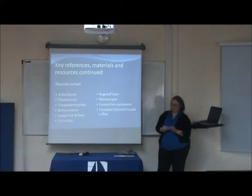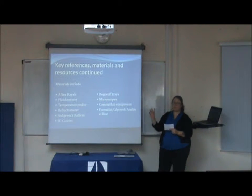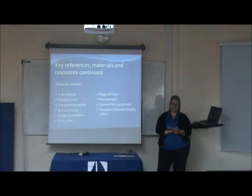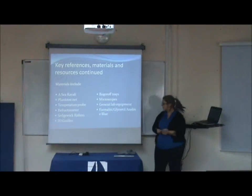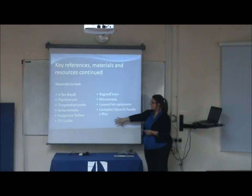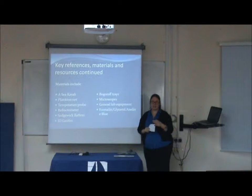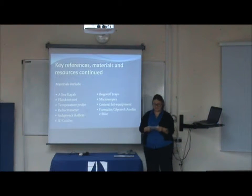I will need a number of materials for my project. The main ones are a plankton net to conduct my sampling. When I get into the lab with my samples, I'll need a Bogorov tray for the abundance count and then Sedgwick-Rafter cells for my diversity counts. A temperature probe and refractometer will also be used to calculate temperatures and salinities, which will be analysed as well.